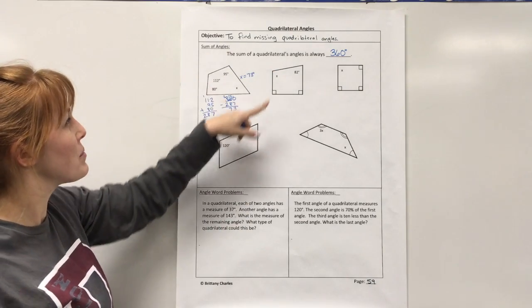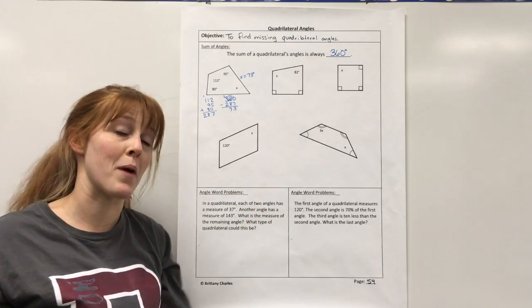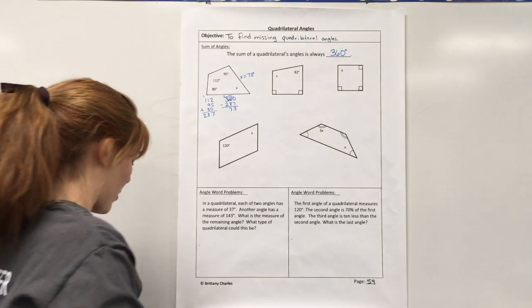So that means X equals 73 degrees. And what kind of shape is this? Well, it would just be a quadrilateral because it's not one of the special types we learned about before. All right, so let's try another one.